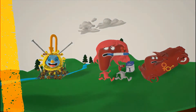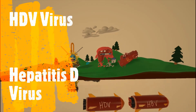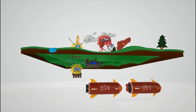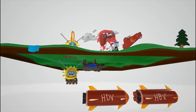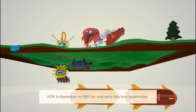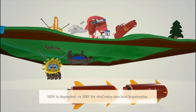Now we're going to discuss the HDV virus, which has similar modes of transmission but lots of differences. The hepatitis D virus is very associated with HBV. HDV — from the delta family, D for delta — is dependent on the HBV virus. It requires HBV for replication because it depends on the HBsAg antigen for entry into hepatocytes.